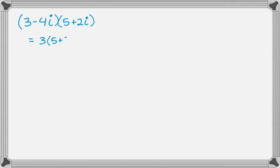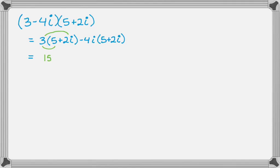I'll write it as 3 times the quantity 5 plus 2i, and then minus 4i times the quantity 5 plus 2i — that's the distributive property. It's the first term times the whole second quantity, then the second term times the whole second quantity. So: 3 times 5 is 15, 3 times 2i is plus 6i, negative 4i times 5 is negative 20i, and negative 4i times 2i is negative 8i squared.